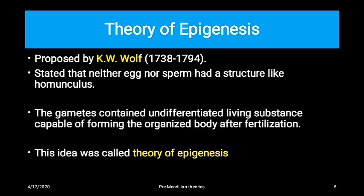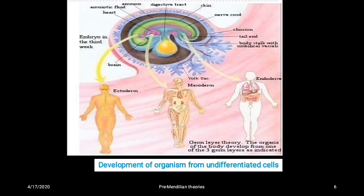The theory of epigenesis was proposed by K.W. Wolf. He stated that a structure like homunculus does not exist in either sperm or egg. According to him, the organized body is formed by the differentiation of undifferentiated living substance after fertilization. This idea was called the theory of epigenesis — undifferentiated cells undergo differentiation and develop into functional organs.